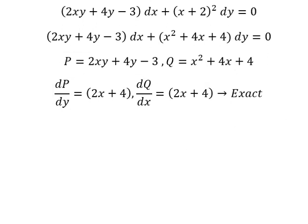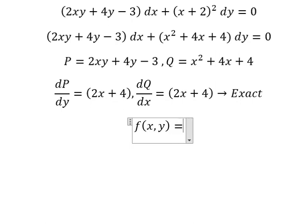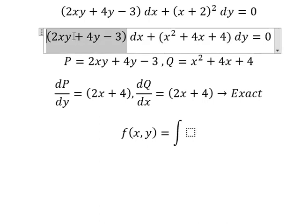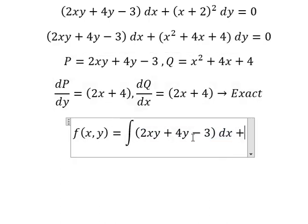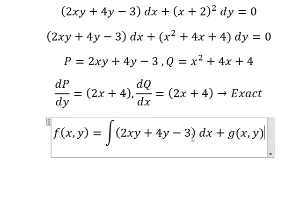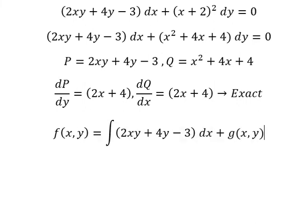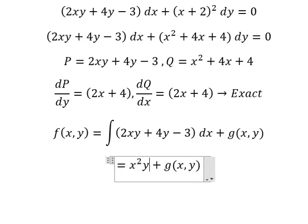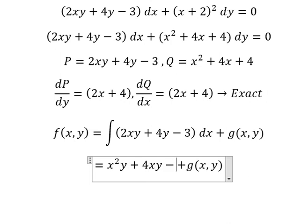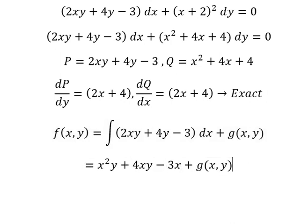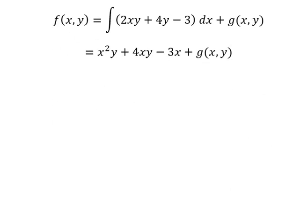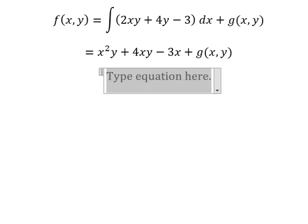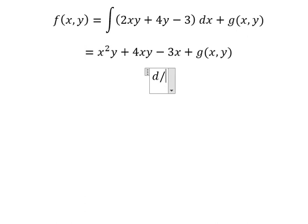Next, I need to set up the function F(x,y) equals to the integral — so I will choose this one plus three. The integral of 2x gives us x squared y; this one gives us 4xy; this one gives us 3x. Next, we need to take the partial derivative of F with respect to y.